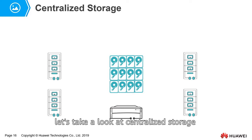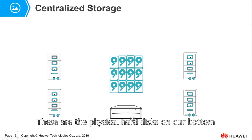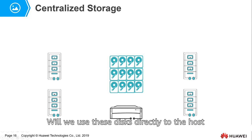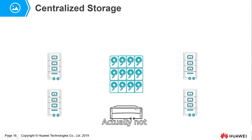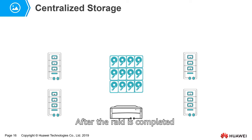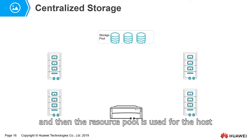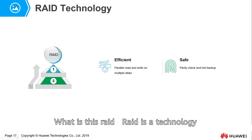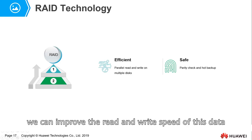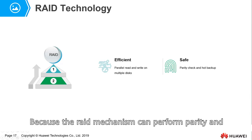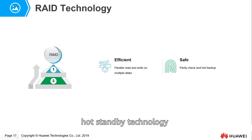First, let's take a look at centralized storage. The physical hard disks are concentrated in a place called a hard disk basket. We don't use these disks directly to the host. First, we perform an operation called RAID on these disks. After the RAID is completed, a resource pool is formed, and then the host reads and writes data to this resource pool. RAID is a technology that can improve the read and write speed of data. Moreover, we can also improve the security of data through RAID, because the RAID mechanism can perform parity and hot standby technology, ensuring that data will not be easily lost.